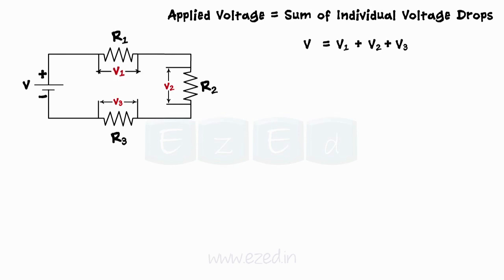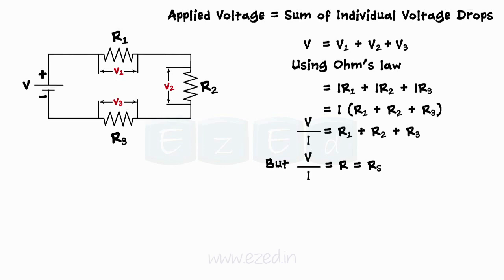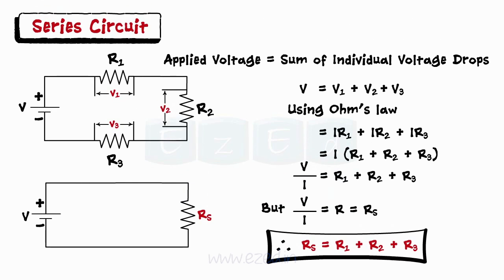Substituting the values of V1, V2, and V3 using Ohm's law, we get V = I × (R1 + R2 + R3), or V/I = R1 + R2 + R3. But V/I equals R, the total resistance. Thus, the three resistances connected in series can be replaced by the series equivalent resistance.